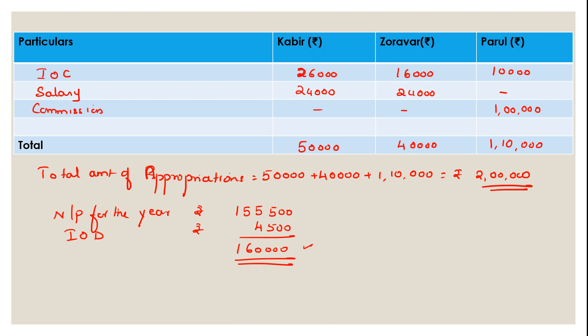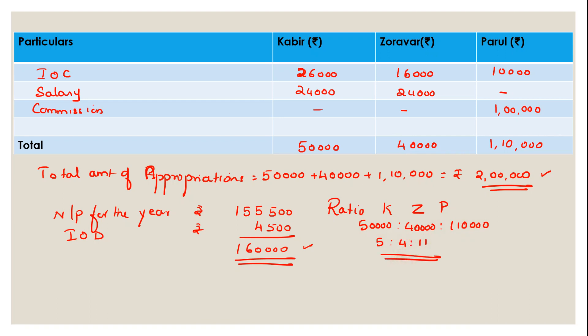The available amount for appropriation is ₹1,60,000. But as per the partnership deed, the partners were to receive ₹50,000, ₹40,000 and ₹1,10,000 — a total of ₹2,00,000. The net profit available is only ₹1,60,000, which is insufficient. So we apply the principle: only what is available can be distributed. We distribute ₹1,60,000 in the ratio of appropriations. The ratio is 50,000 : 40,000 : 1,10,000 — that is 5 : 4 : 11.